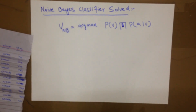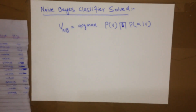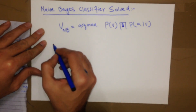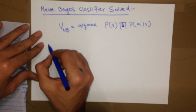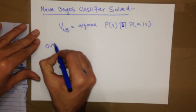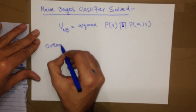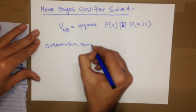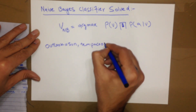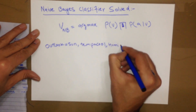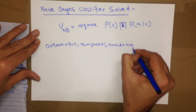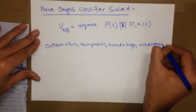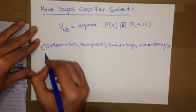Let's solve it quickly because I'm very excited about solving this problem. We are given a question: the instance is outlook equal to sunny, temperature equal to cool, humidity equal to high, and wind equal to strong.